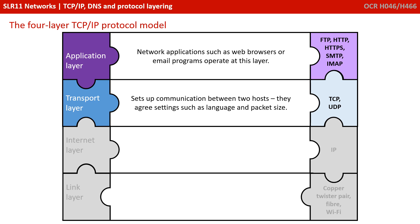The next layer is called the transport layer. This sets up communication between two hosts — they agree on settings such as the language and the packet size. This is where protocols such as TCP and UDP live.